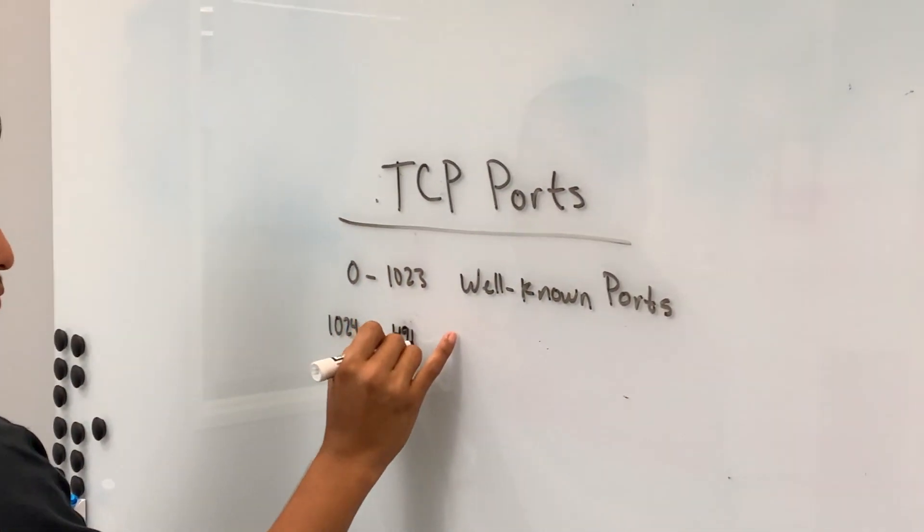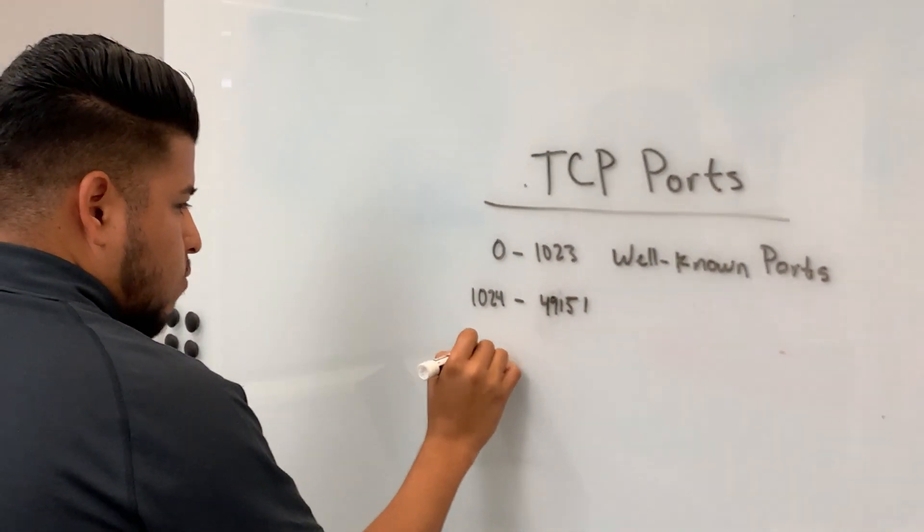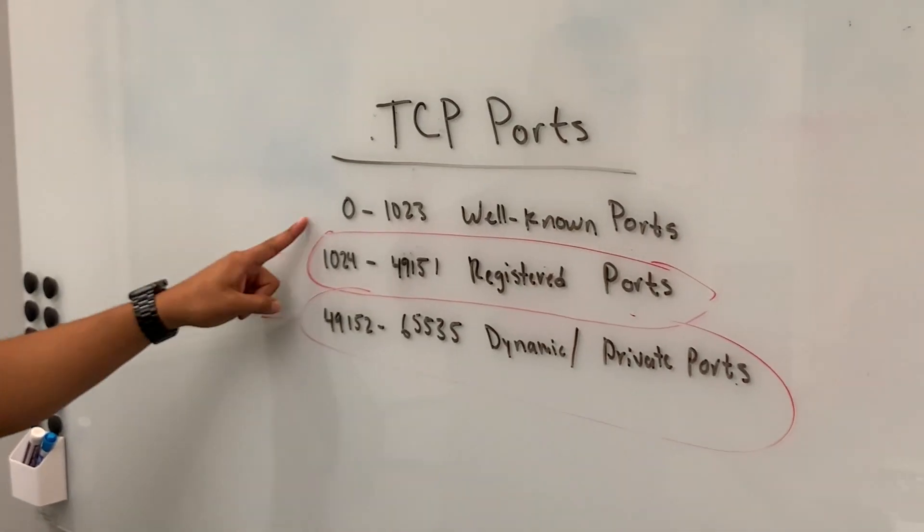Well-known TCP ports are used differently across devices and protocols. They cover a range from 0 to 1023 and are used by system processes that provide widely used network services. For example, a device using SNMP — you don't want to cross-reference that with Modbus communication through that same port.